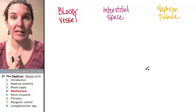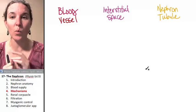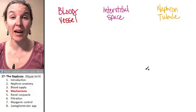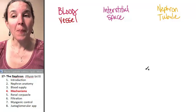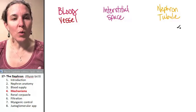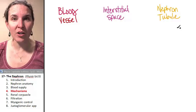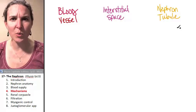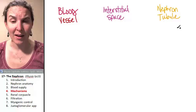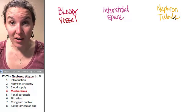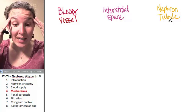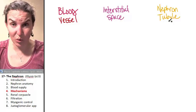There are several important mechanisms, four actually, that we need to consider when looking at nephron function. First of all, we need to make sure that we're really clear about what compartments we're talking about. We've drawn a nephron, so you have an idea that a nephron is just a tube.